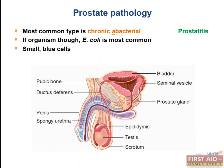E. coli is treated with trimethoprim-sulfamethoxazole or ciprofloxacin, a fluoroquinolone. Be aware of the small blue cell histological finding: USMLE may give a 68-year-old man with trouble initiating his urinary stream and ask for the diagnosis. Students select BPH, but if there's small blue cell infiltration — these are leukocytes, specifically lymphocytes with chronic prostatitis — that's prostatitis, not BPH. Simple BPH shows glandular hyperplasia, not small blue cells.